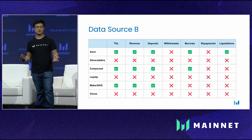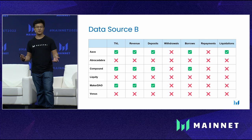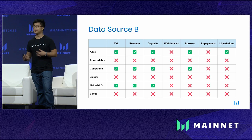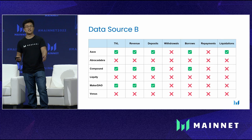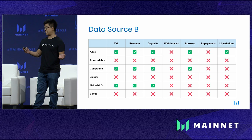She finds data source B, which has more depth with regards to the metrics it supports. But immediately you'll notice that some metrics aren't actually supported across the board — liquidations, for example, is supported on Aave but not for Compound and MakerDAO. There are also instances where the protocol is entirely unsupported, with no data for Abracadabra, Liquity, or Venus.